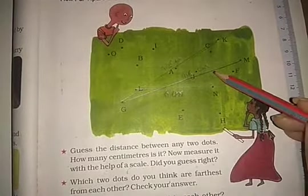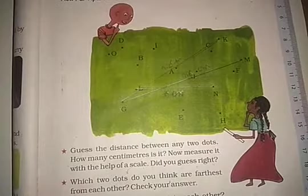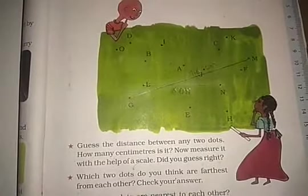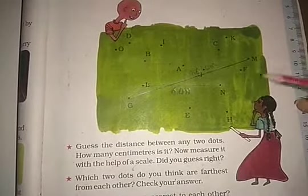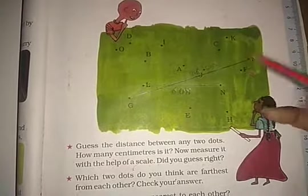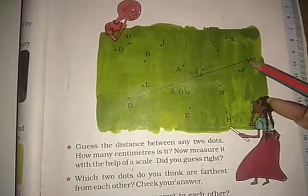Next: which two dots are nearest to each other? Check your answer. So first of all we will check. We can observe - I think F and M, O and D.